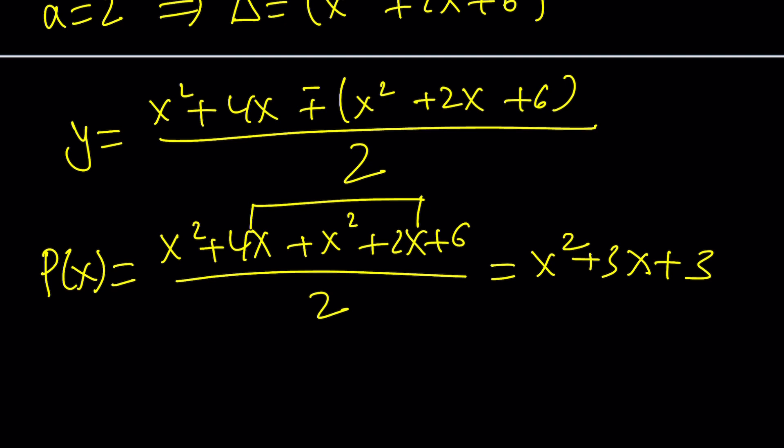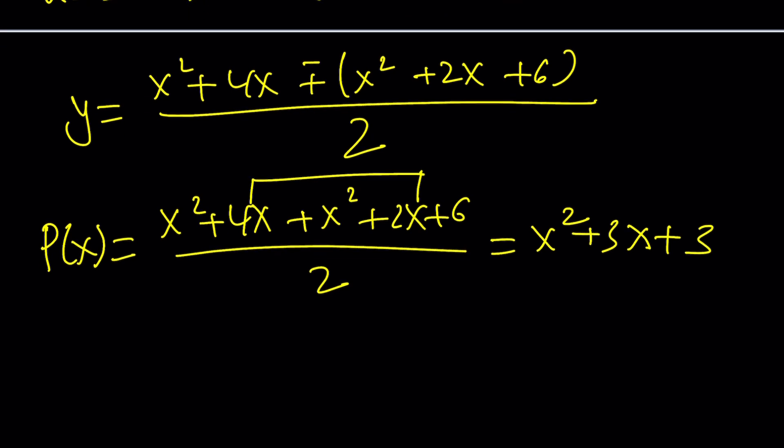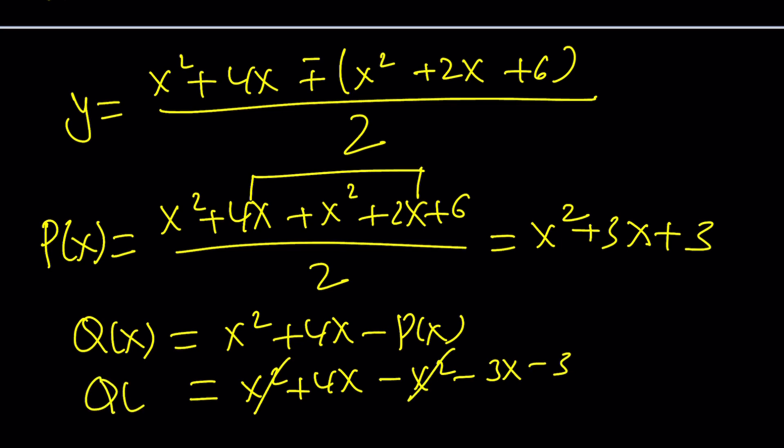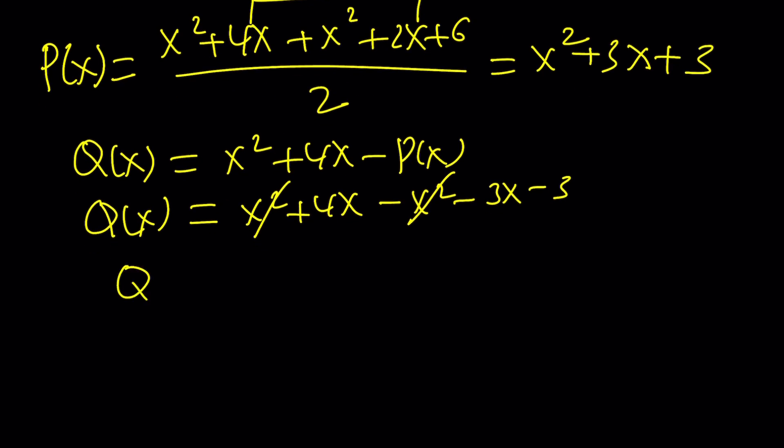What is Q(x)? If that's P(x), then Q(x) can be found by the formula. Remember, we substituted x² + 4x - P(x). So to find them, I just need to subtract P(x), which is x² + 3x + 3. x² cancels out, and Q(x) becomes x - 3.